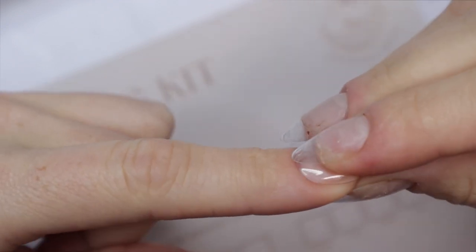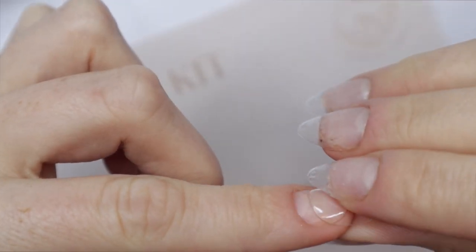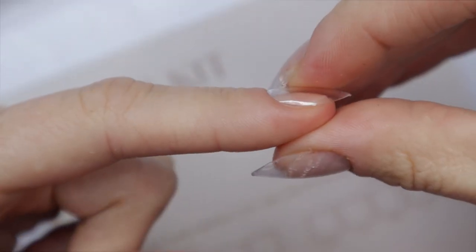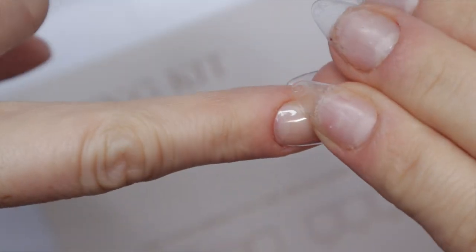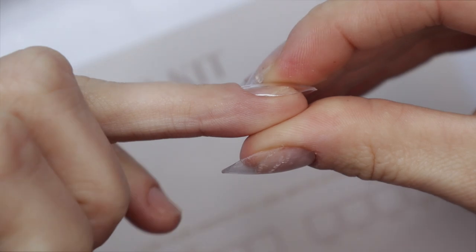And the reason why you don't want to go with the size that you have to force down and press down flat like I'm showing you here is because if you try to glue a tip like this onto your nail, it will pop off a lot sooner than one that is properly fitted to your nail.